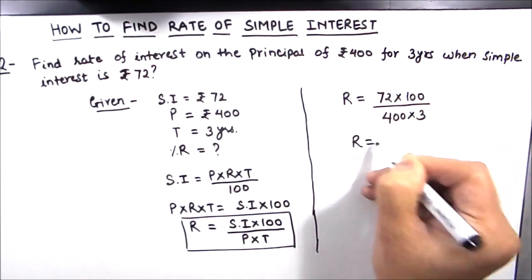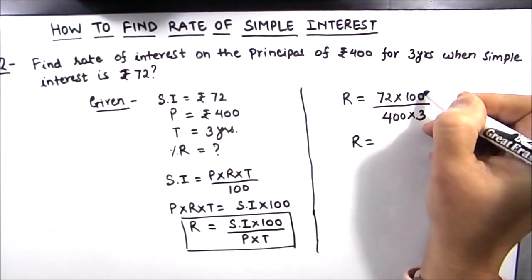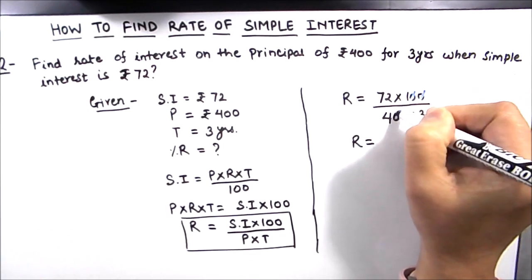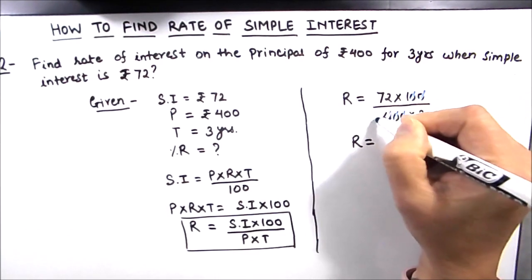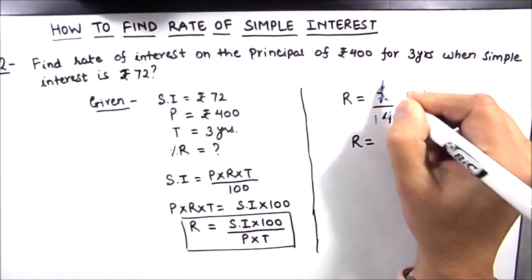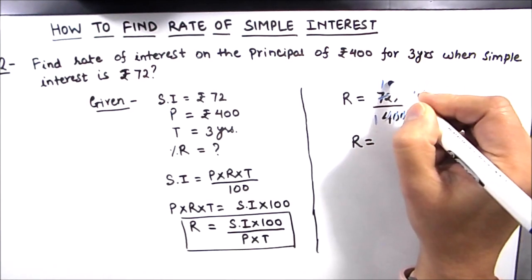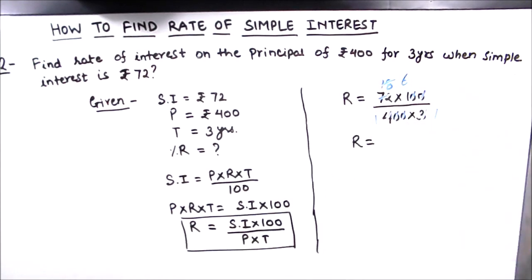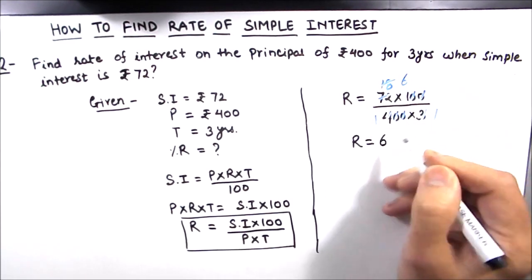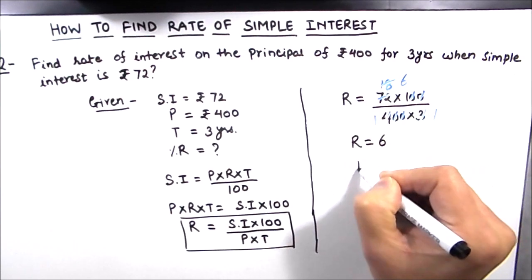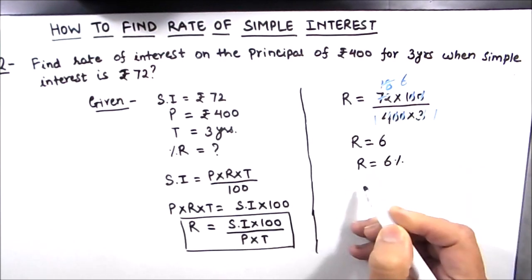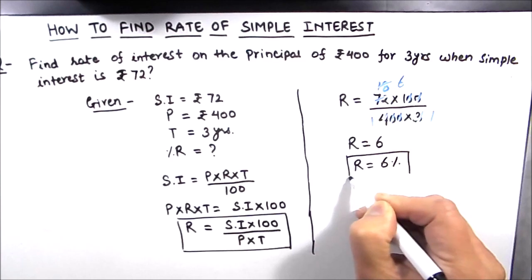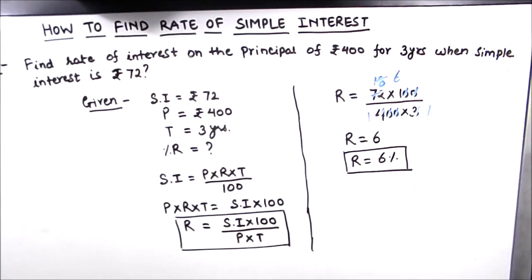Simplifying: the two zeros cancel, and after further simplification we are left with 6 in the numerator. So our rate of interest is 6%. This is how, by using the simple interest formula, we can find the rate of simple interest.